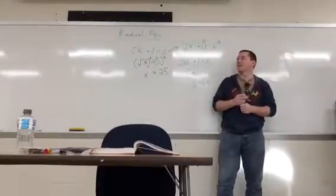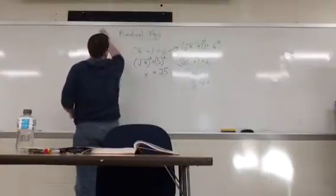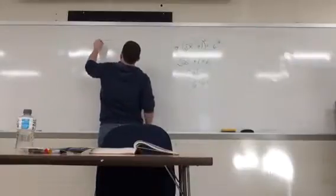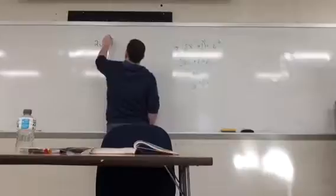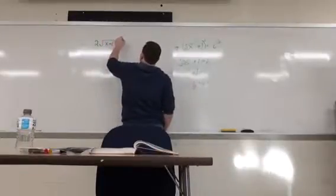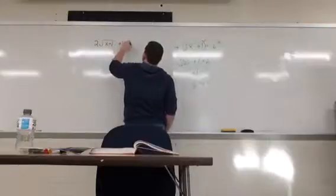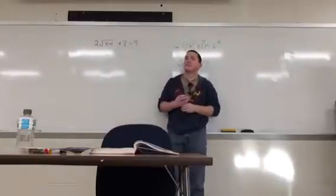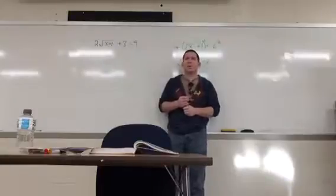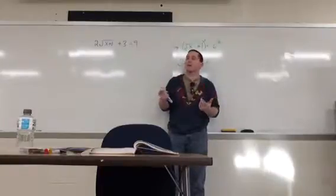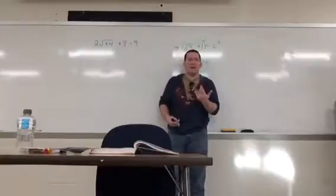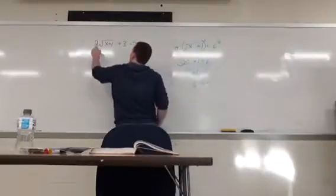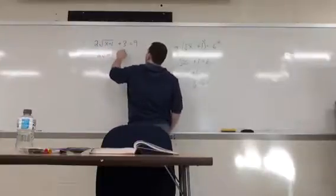Okay? Pretty easy? Good. Then we'll increase the difficulty, because these are fun. Suppose we have 2 times the square root of x plus 1 plus 3 equals 9. What do I do? What causes the problem? The radical again, right? So what do I do? Isolate it. Isolate it, just like before. Do my same algebra. So first, get rid of the plus 3. Subtract it. And you get 2 square root of x plus 1 equals 9 minus 3, 6.